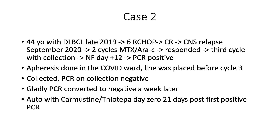Another case: 44-year-old with diffuse large B-cell lymphoma, CNS relapse — high-risk. Two cycles of methotrexate responded. On the third cycle with planned collection, the patient developed fever and positive PCR on day 12. We performed apheresis in the COVID ward despite resistance. Fortunately, the line had been placed before admission. She collected, PCR on the collection was negative, she converted back quickly to negative, was admitted to the transplant ward, transplanted, and is still alive disease-free — 21 days from the first positive PCR.